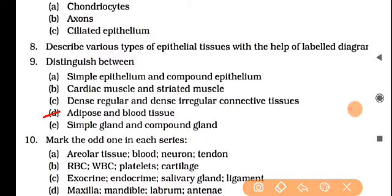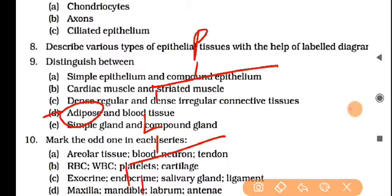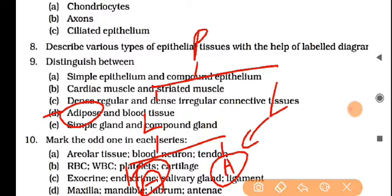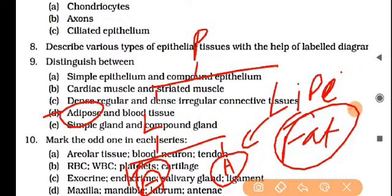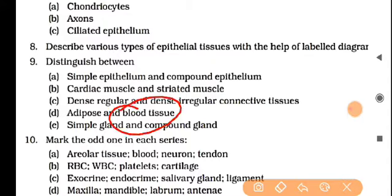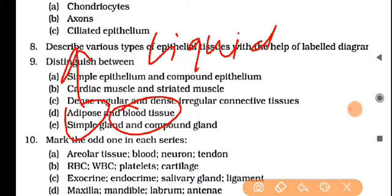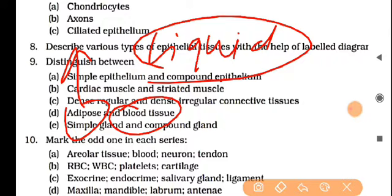Next — adipose and blood tissues. Adipose is a proper connective tissue, specifically a loose proper connective tissue. There are two types: areolar and adipose. Areolar tissue contains macrophages and provides internal support. Adipose tissue is the key difference between adipose and blood tissues. Blood components — RBC, WBC, and platelets — you already know.